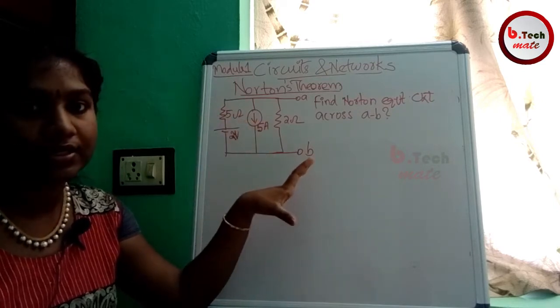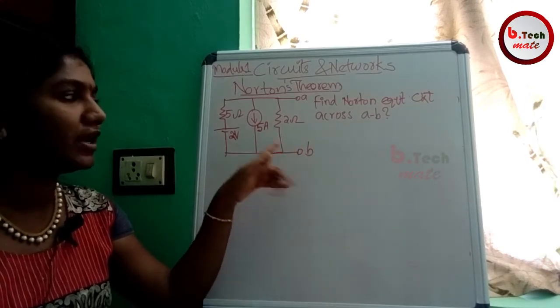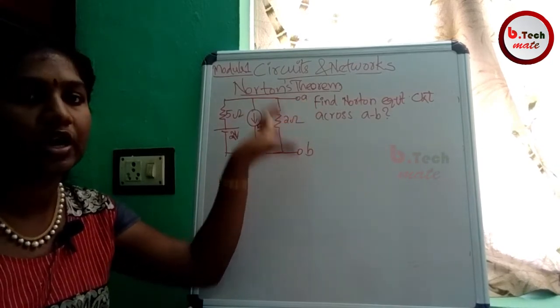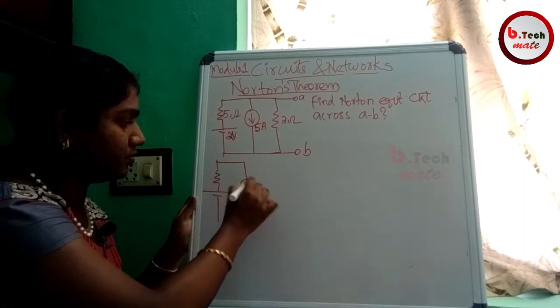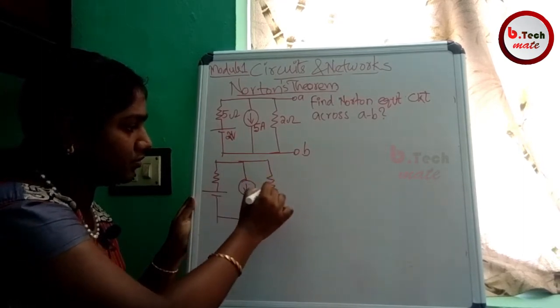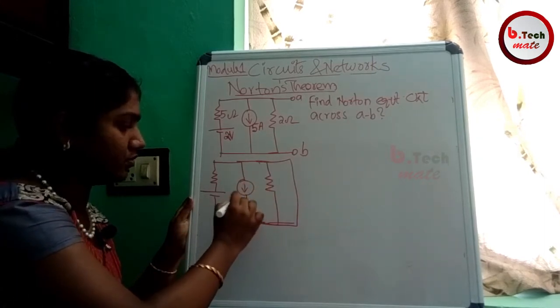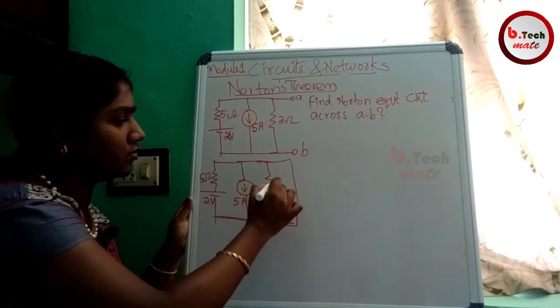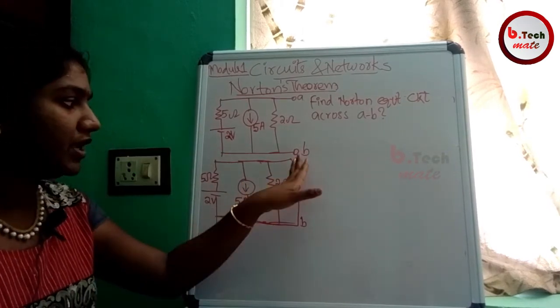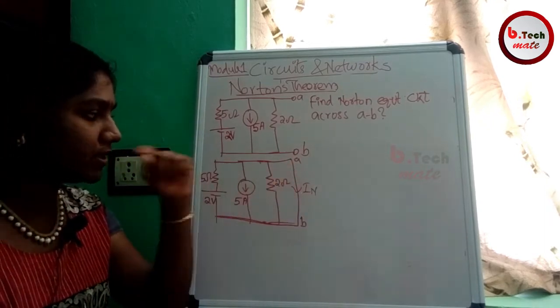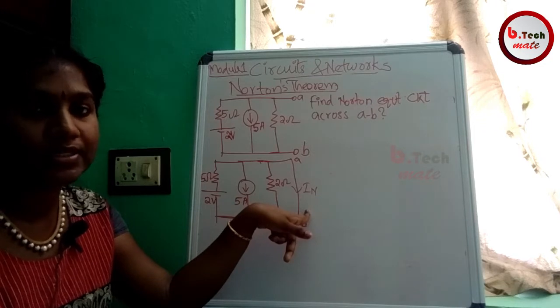Now if we develop a Norton equivalent circuit, we use a DC circuit. The second step is to short the load resistance. I am shorting AB terminals. This is also known as Norton current. When AB is shorted, the voltage across it exists.